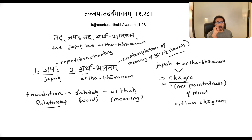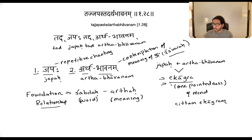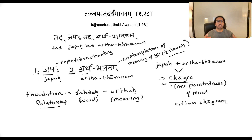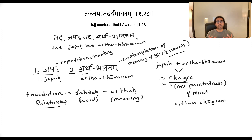This is one of the most important ways to attain one-pointedness or samadhi in the Yoga Sutra, as we'll see. The commentary ends by saying: do the chanting and yoga through this blissful union, and then the paramatma — the purusha — is revealed. Purusha shines out when there is this constant chanting in the practice of yoga.